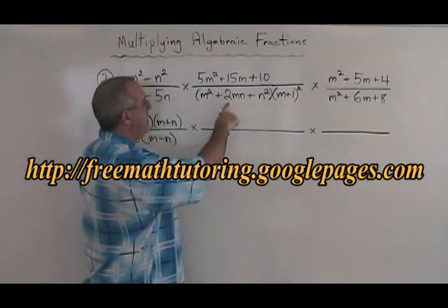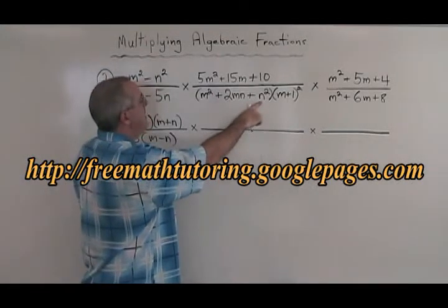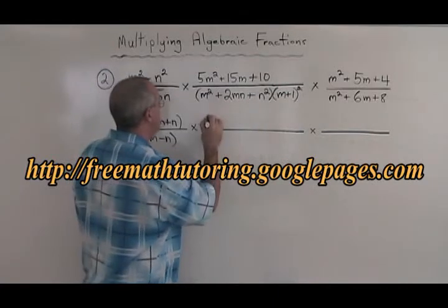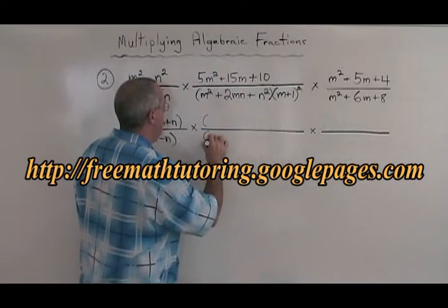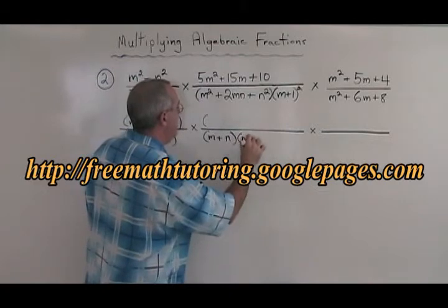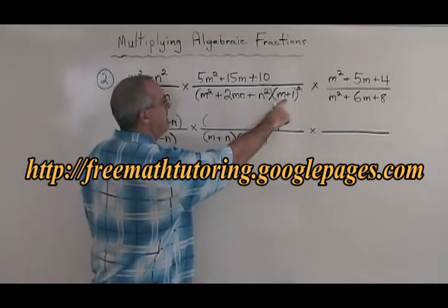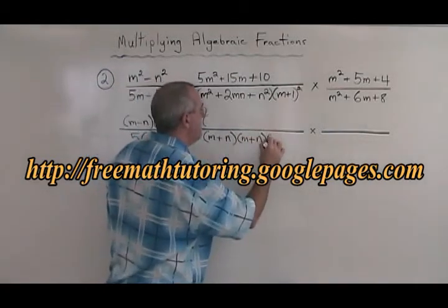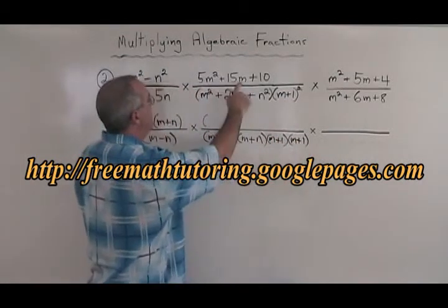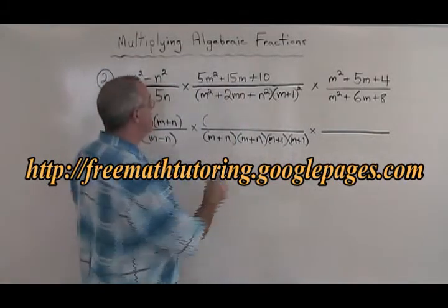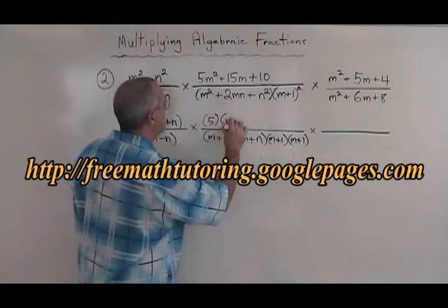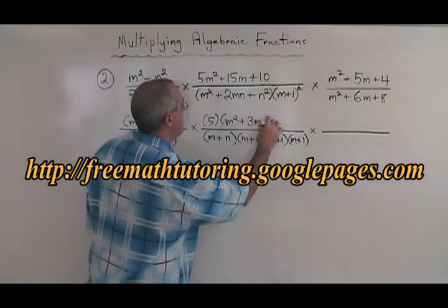The denominator here starts with a trinomial. What two numbers multiply to give 1 and add to give 2? The answers are 1 and 1, so you get (m plus n)(m plus n). And then (m plus 1) squared I can just write as (m plus 1)(m plus 1). The numerator has a common factor — factoring out 5 gives 5 times (m squared plus 3m plus 2).